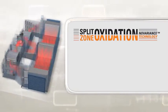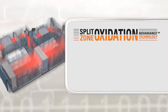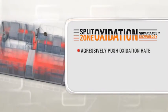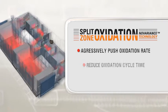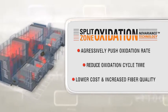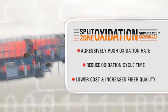Despatch's next-generation split-zone oxidation oven with no-variance technology allows you to aggressively push the oxidation rate, reduce oxidation cycle time, and lower the cost of high-quality oxidized fiber.